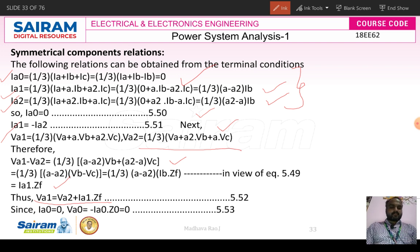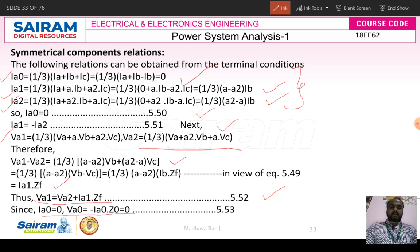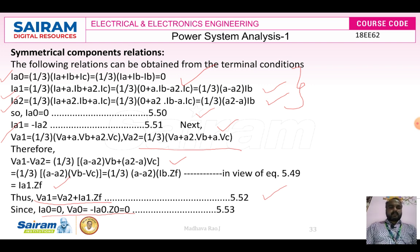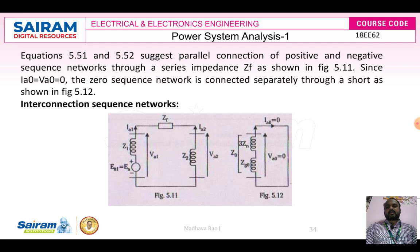Using symmetrical component voltages, we established that VA1 equals VA2 plus IA1 into ZF. Also, IA0 equals zero and VA0 equals zero. Now, coming to the sequence networks for the LL fault, the zero sequence network is kept separately since IA0 equals zero.